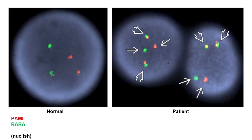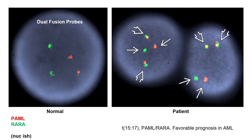Let's practice. What is the probe being used here? These are dual fusion probes — notice the normal signal being two separate red and green signals. The disease depicted on the right is a translocation t(15;17) between PML and RARA, which carries a favorable prognosis in AML. The thin arrows point to normal uninvolved alleles, while the thick arrows point to the reciprocal translocations.